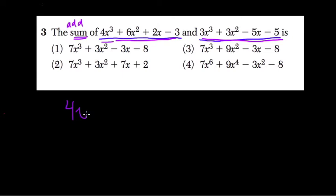That ends up being not so bad because all you have to do is line up like terms. So what I mean by that is I'm going to add 4x to the third with 3x to the third, and they're like terms because their variables have the same exponents. So we can add them and 4x to the thirds plus 3x to the thirds is 7x to the thirds.